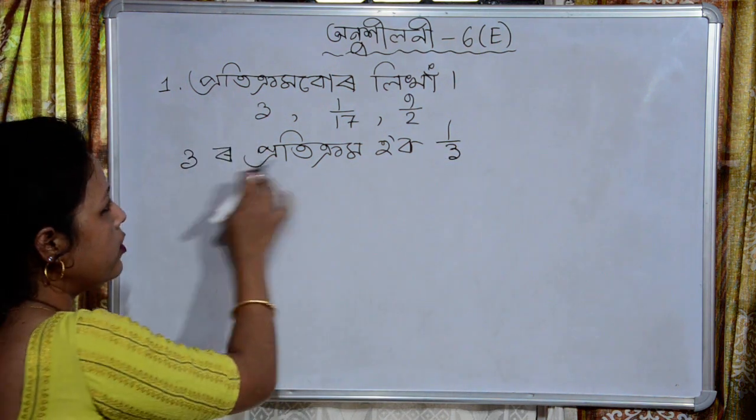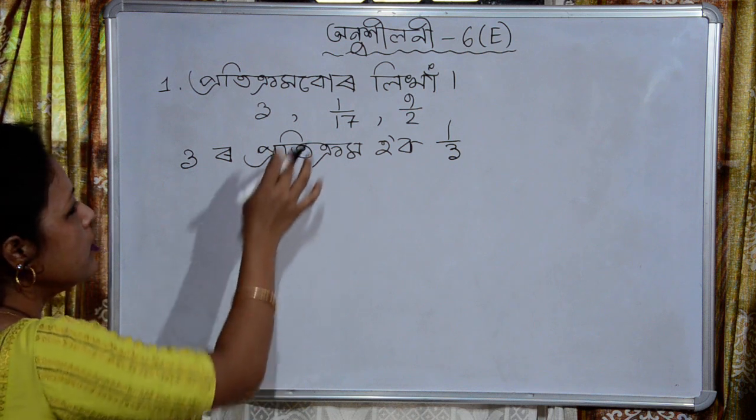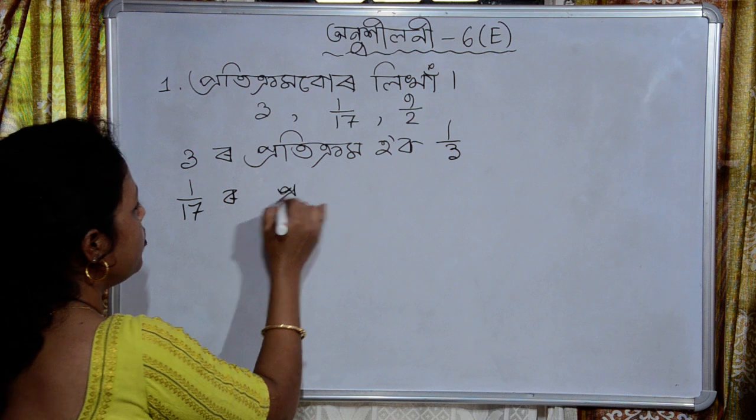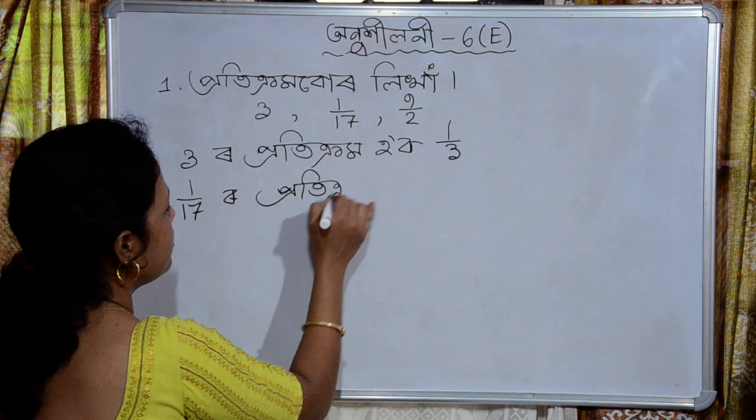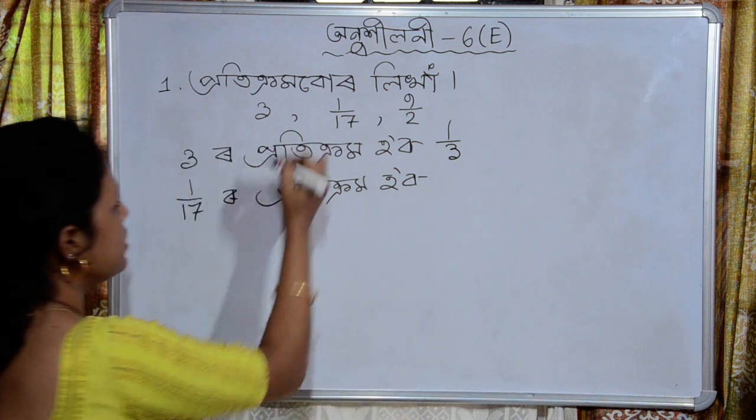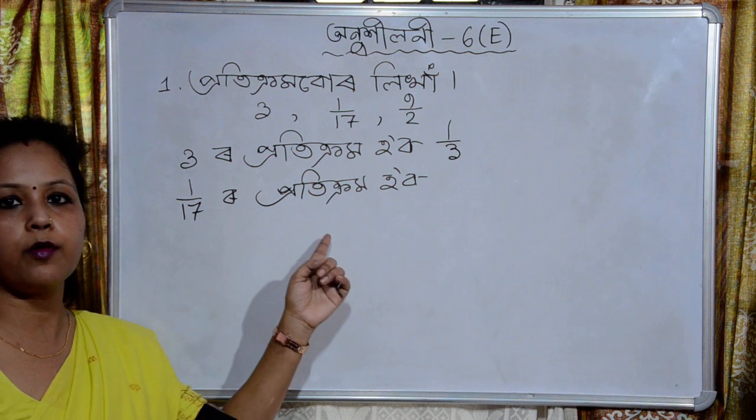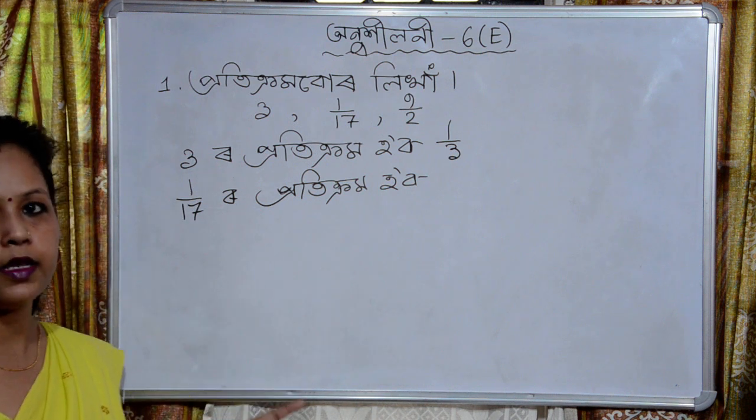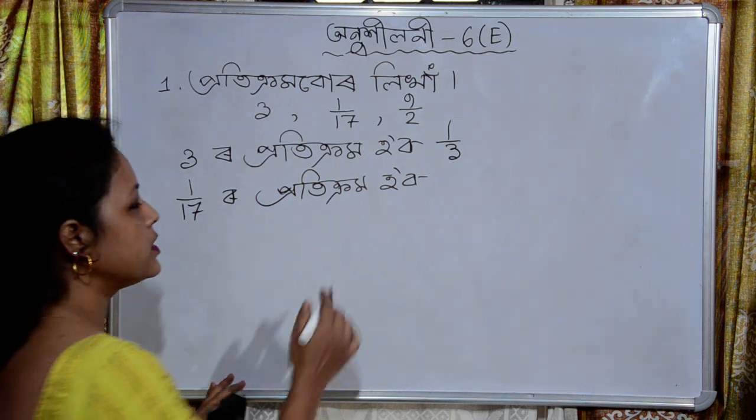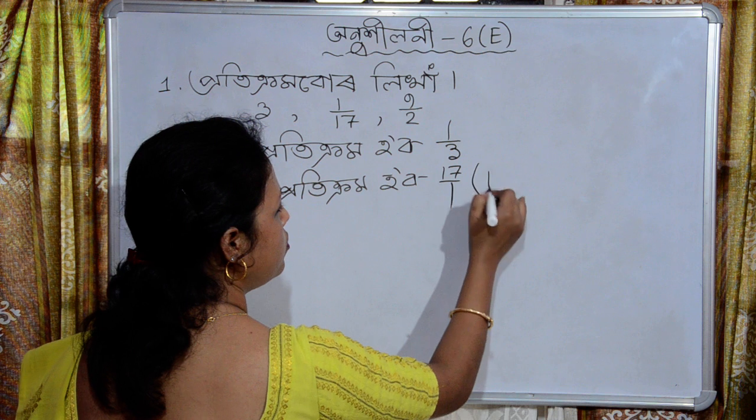3 is equal to 1 by 3. Next, 1 by 7 is 10. So 1 by 17 is 17. So I'm going to start with 11. 17 by 1, which will be 17 by 1? 17 by 1, which will be 17.